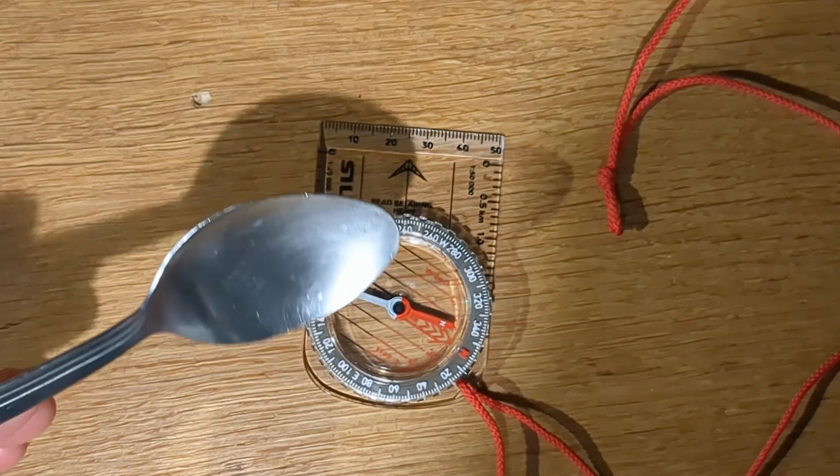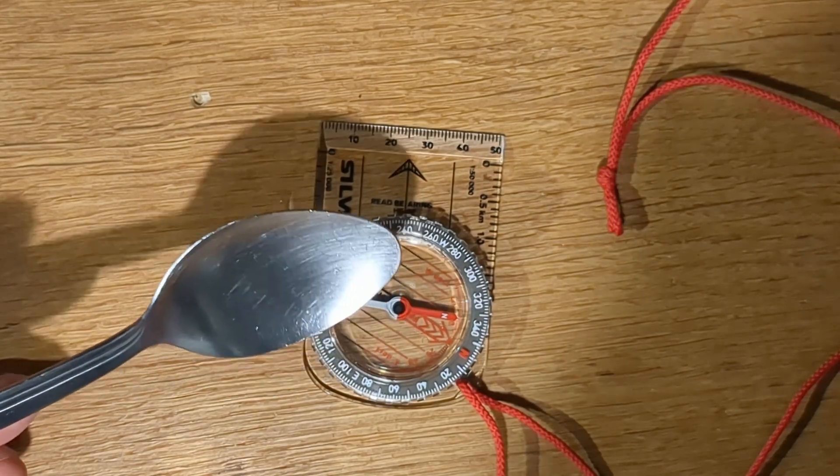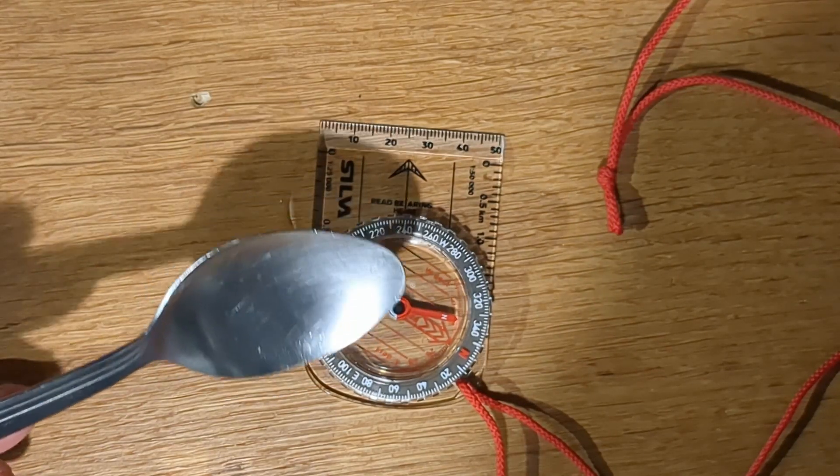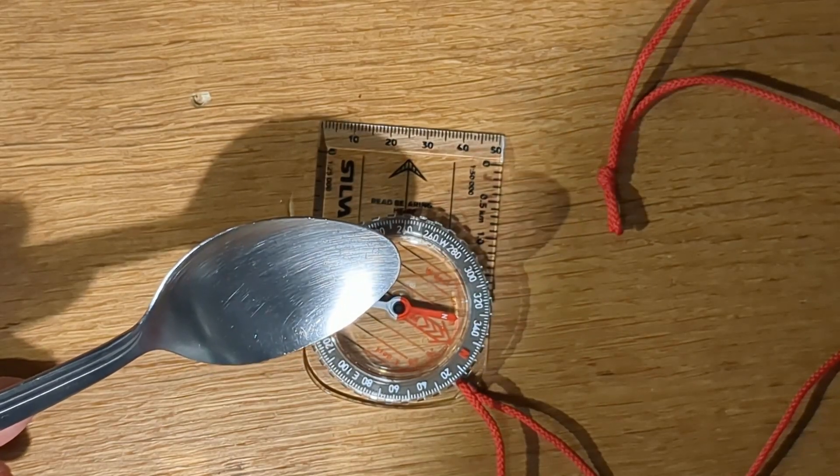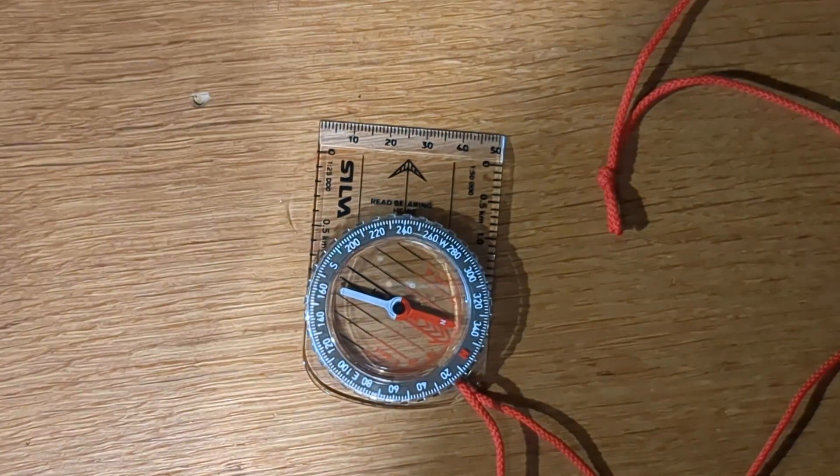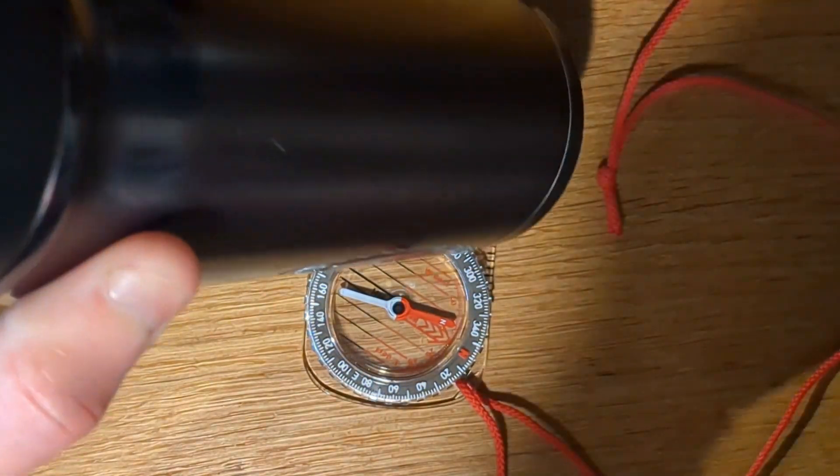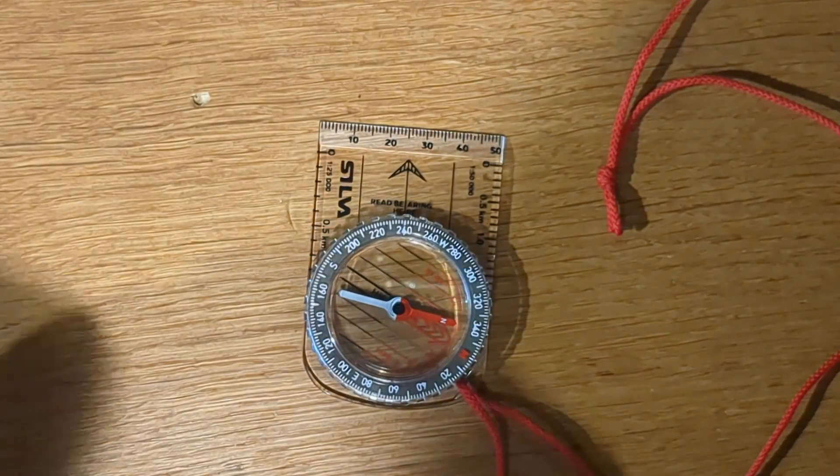This is probably a bit ridiculous—who brings a spoon when they're out using a compass? But I've actually seen someone carrying a metal object behind a map with their compass on top, leading them astray for several kilometers before they realized their mistake. And it's not just things like spoons that you have in your hand, but a water bottle nearby that can also influence the direction of the needle.